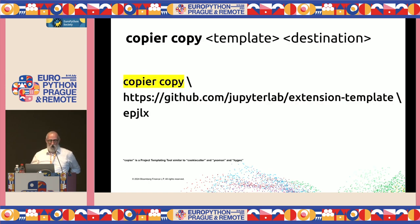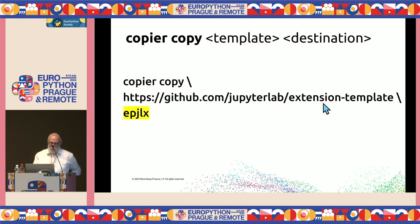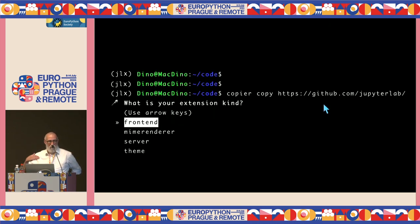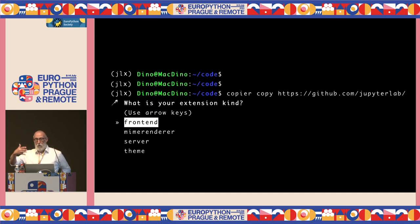Next, run Copier — a project templating tool similar to CookieCutter or Yeoman. Run the copy command on Copier, pulling the template from github.com/jupyterlab/extension-template, and name your extension EPJLX for EuroPython JupyterLab extension. Like other templating tools, it asks you a series of questions to configure your template — the first being what type of extension you want to create.